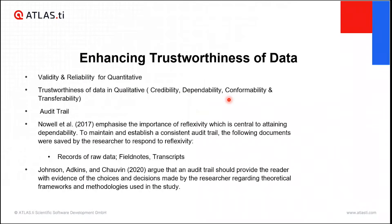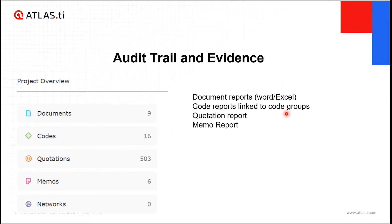The four pillars of trustworthiness of data are credibility, dependability, confirmability, and transferability. You can demonstrate how the audit trail through dependability has assisted you to enhance this trustworthiness of data. When you set up a project at the end you will have a picture showing the title of your study and your name — this is part of research quality and rigor.